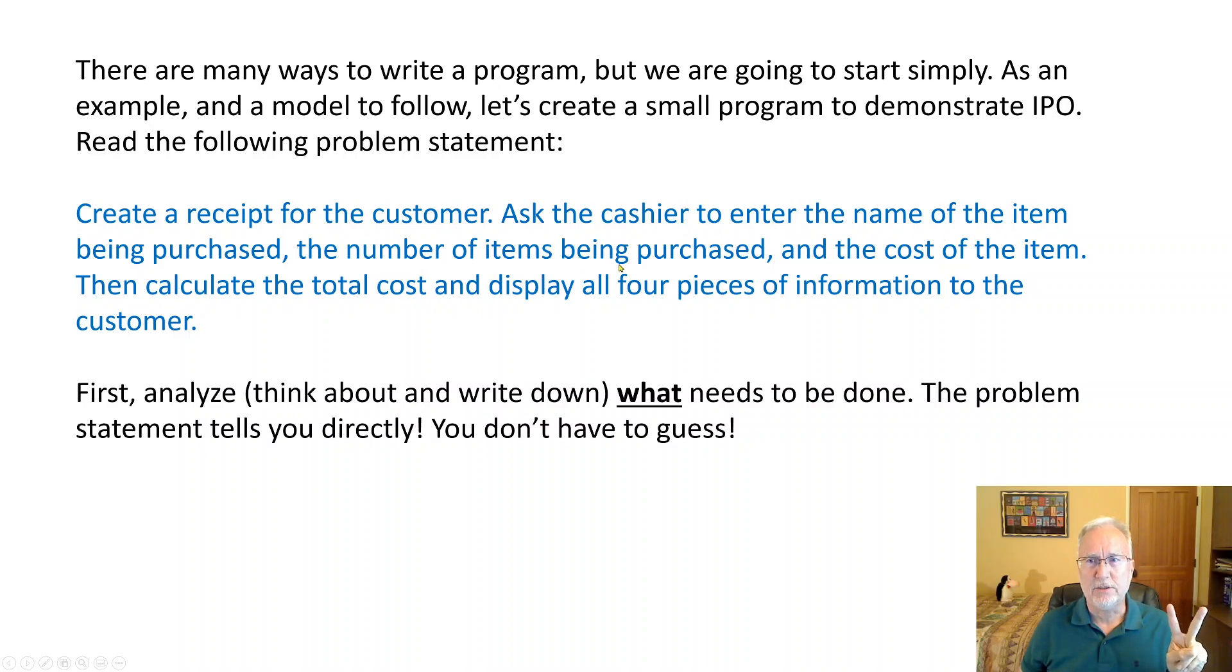The number of items being purchased, that's something else. And the cost of the item. So we're asking the user, the customer, for three things. Then we're calculating the total cost and displaying all four pieces of information to the customer. So we're getting three inputs and we're going to create one output value and display all four.